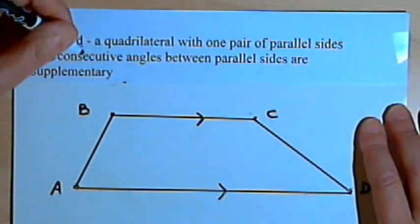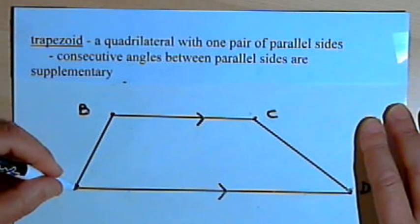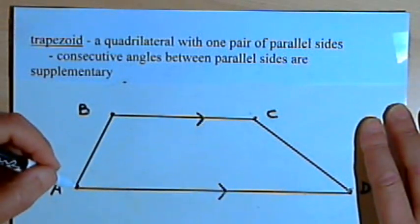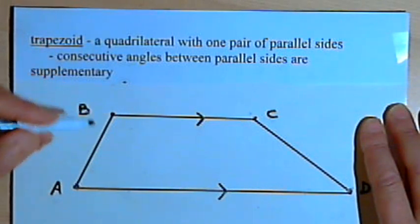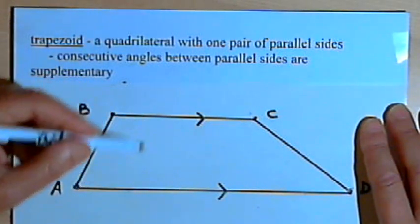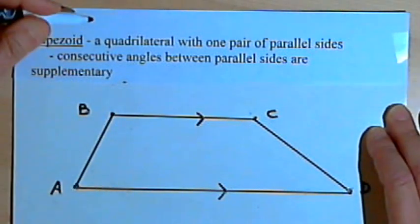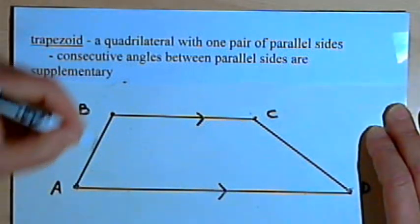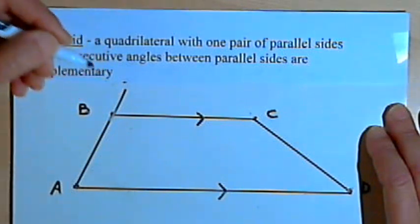I've got a property here that says consecutive angles between parallel sides are supplementary. Angle A and angle B are consecutive angles — if I go around this trapezoid, angle A and angle B come after one another — and they're between the two parallel sides, BC and AD. I want to show that they're supplementary. So what I'm going to do is extend side AB so that I form an exterior angle at B.